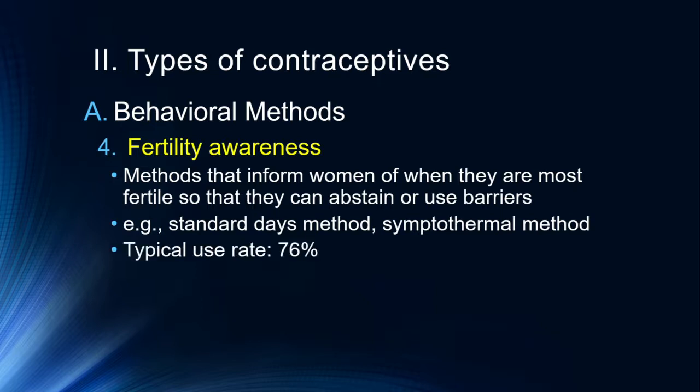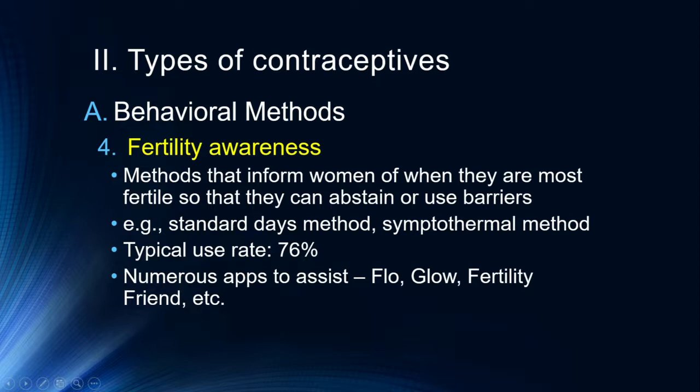Typical use rate for fertility awareness is about 76% effective — people lose track and it's not entirely accurate. If you're going to use this method you probably want to add a plus or minus day on each end of what you think might be happening. There are apps to assist with this — Flow, Glow, and Fertility Friend are some that will help track when you're more or less fertile. These are used in two directions: to help some people have children and help others avoid having them.